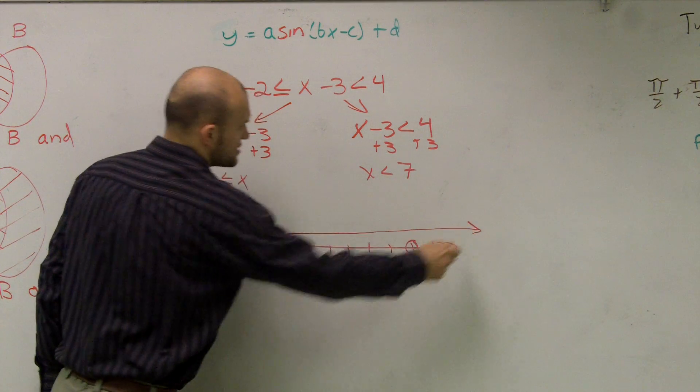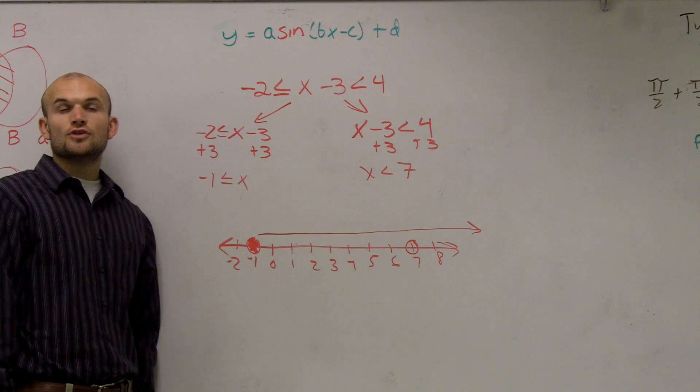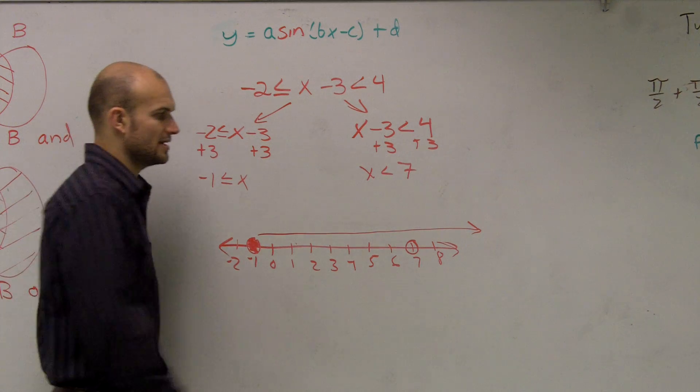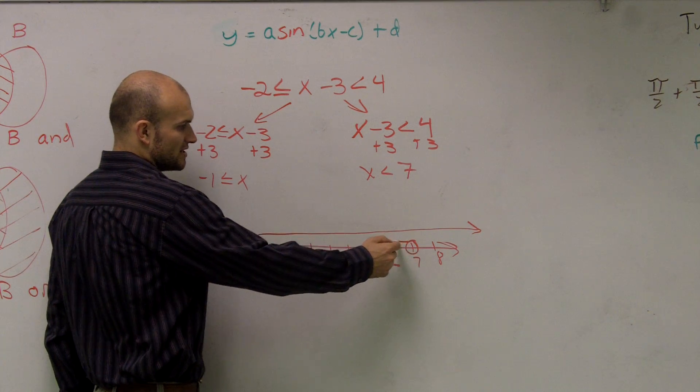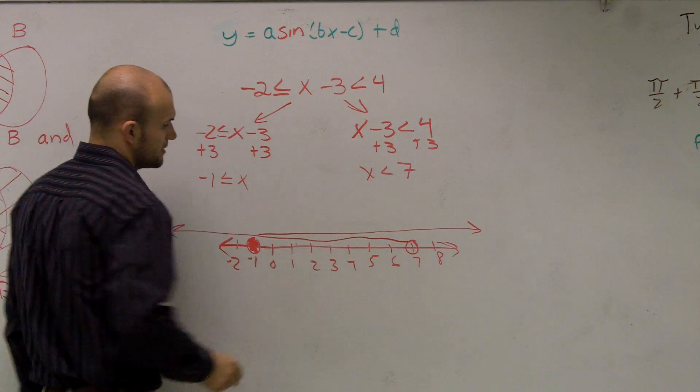So you can say, like, all those numbers go in that direction, right? Then you look at this one. All numbers less than seven. Well, that's going to be, obviously, the numbers going in the other direction. Is that a seven right there? Yes, that's a seven.